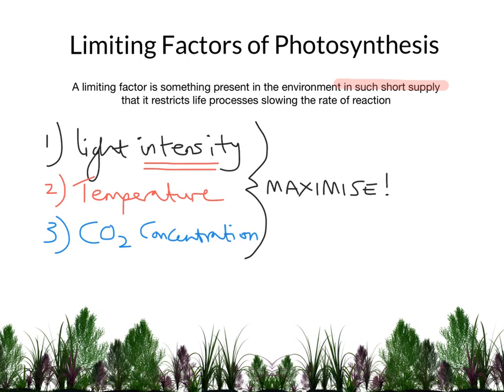There's a law of limiting factors which you should be aware of. The law of limiting factors states that for photosynthesis to occur at its maximum rate, all three factors need to be at their maximum value. If one or more factor is not at its maximum value, then the rate of photosynthesis will be limited. That is ultimately what we mean when we refer to a limiting factor — these three things that could limit the rate at which photosynthesis occurs.